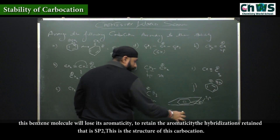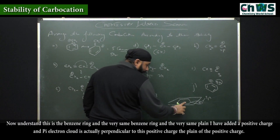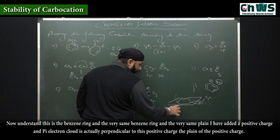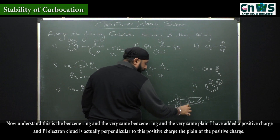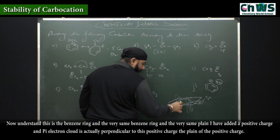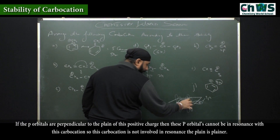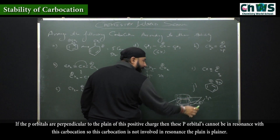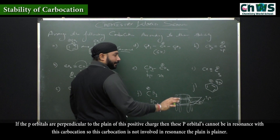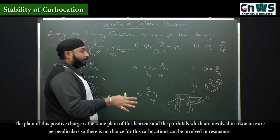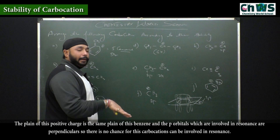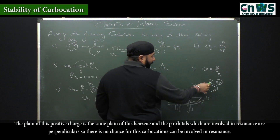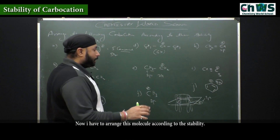To retain aromaticity, the hybridization is retained as sp2. The benzene ring is planar and I have a positive charge in the same plane. The pi electron cloud is actually perpendicular to this positive charge. Since the p orbitals are perpendicular to the plane of the positive charge, these p orbitals cannot involve in resonance with this carbocation. So this carbocation is not involved in resonance.